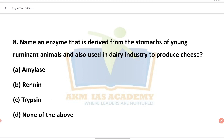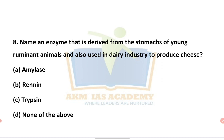The enzyme derived from the stomach of young ruminant animals and also used in the dairy industry to produce curds — what is it called? The question asks: what enzyme is present in the stomach of young ruminant animals, and what enzyme is used in the dairy industry? Options are: amylase, renin, trypsin, or none of the above.